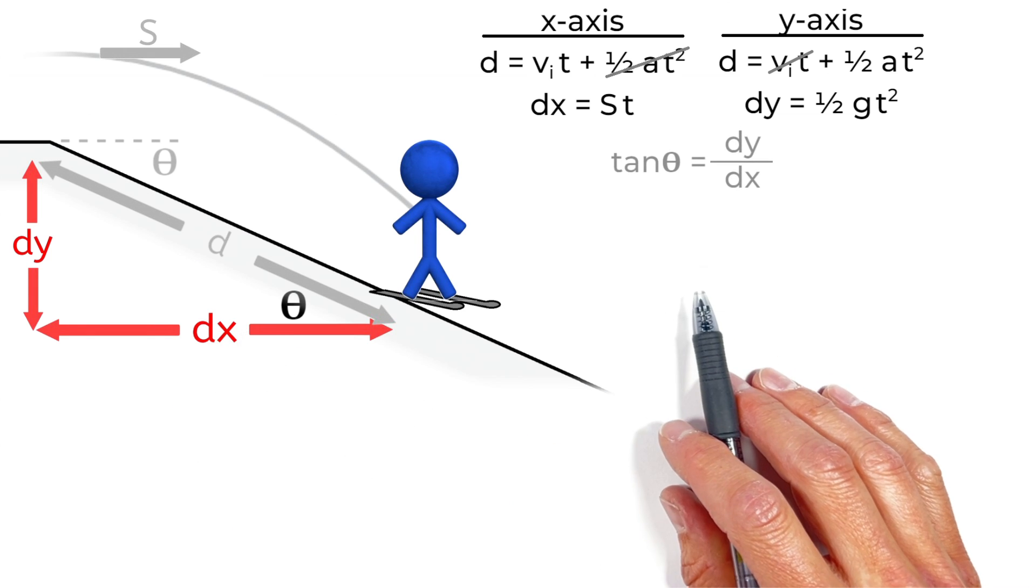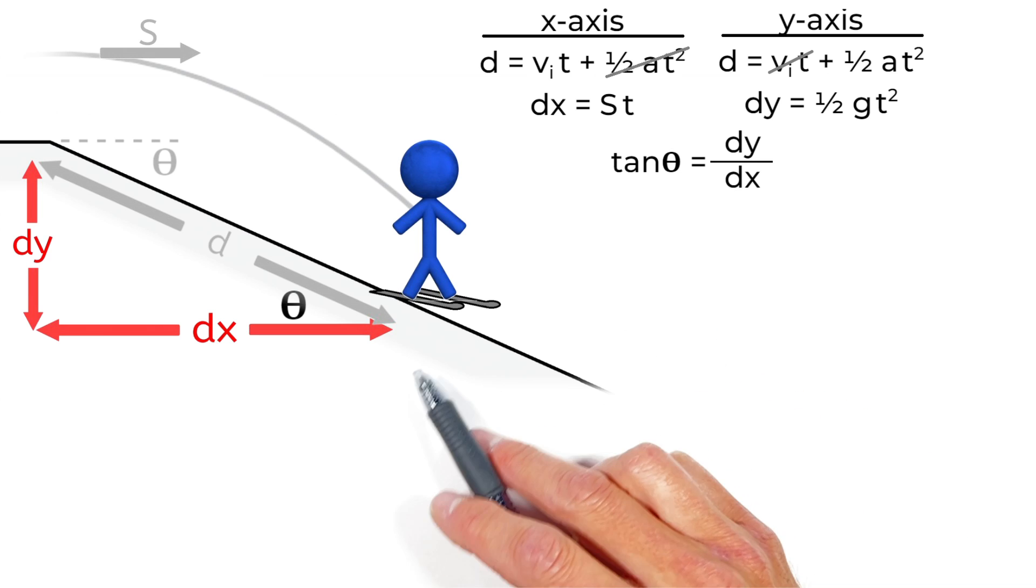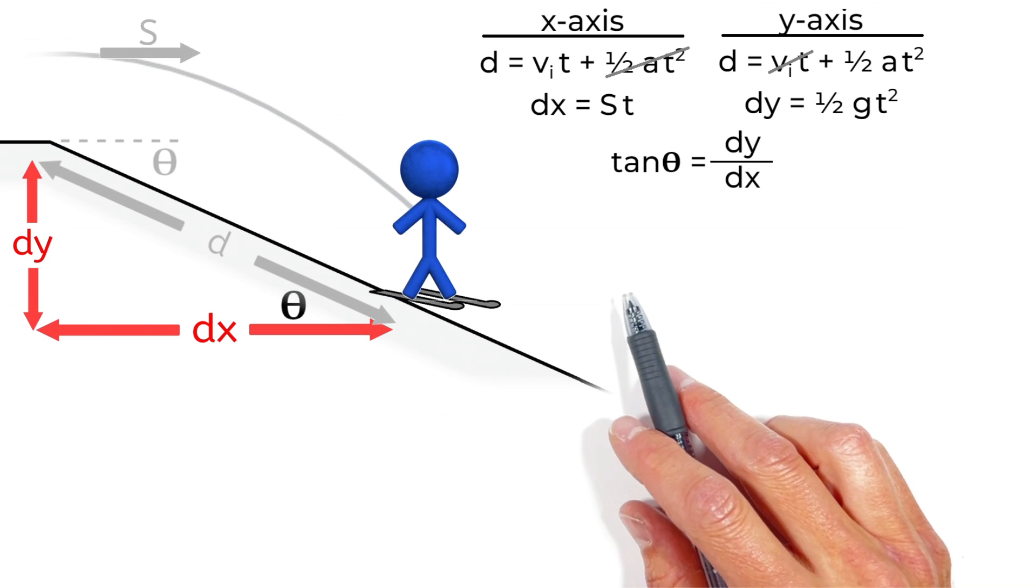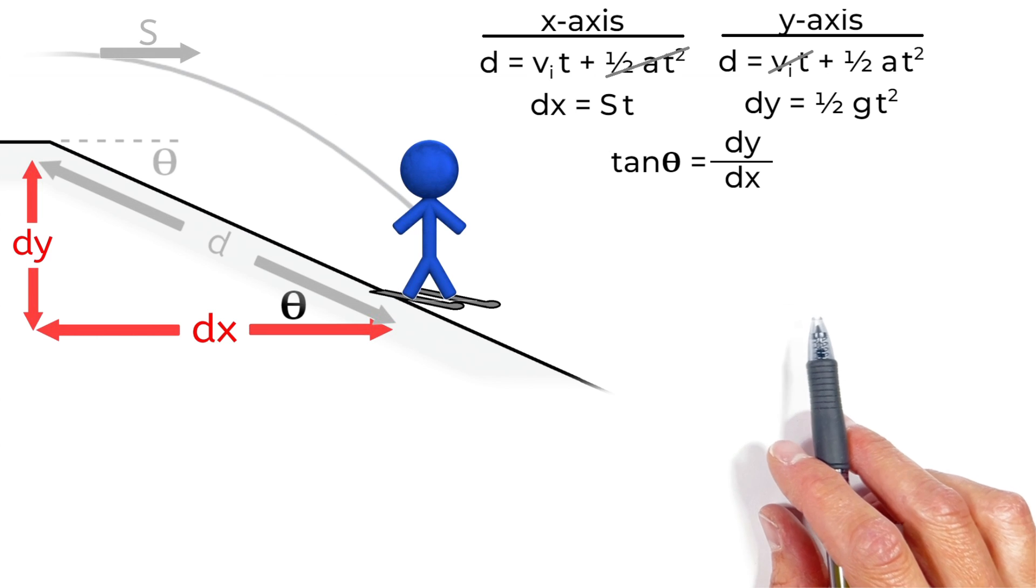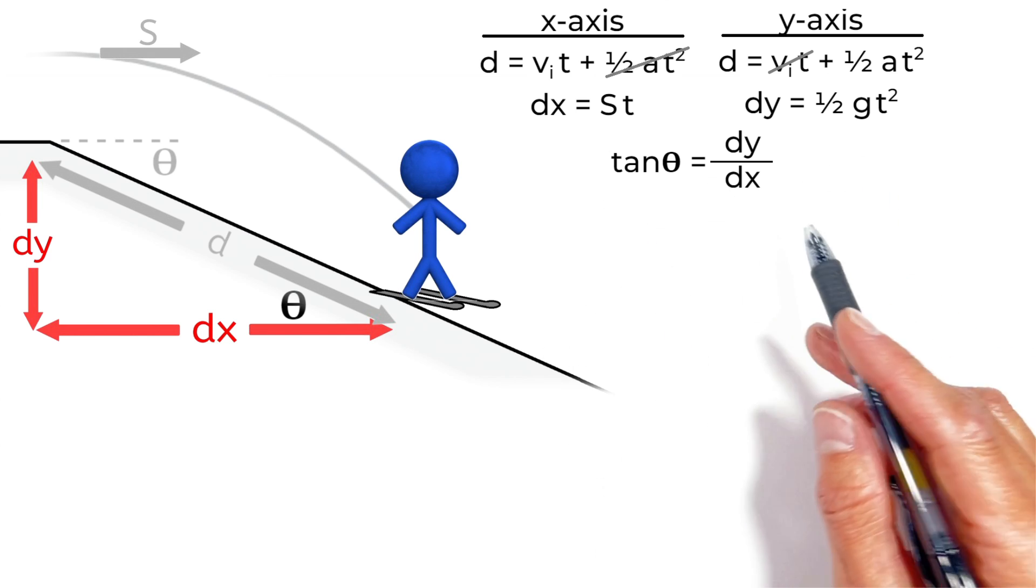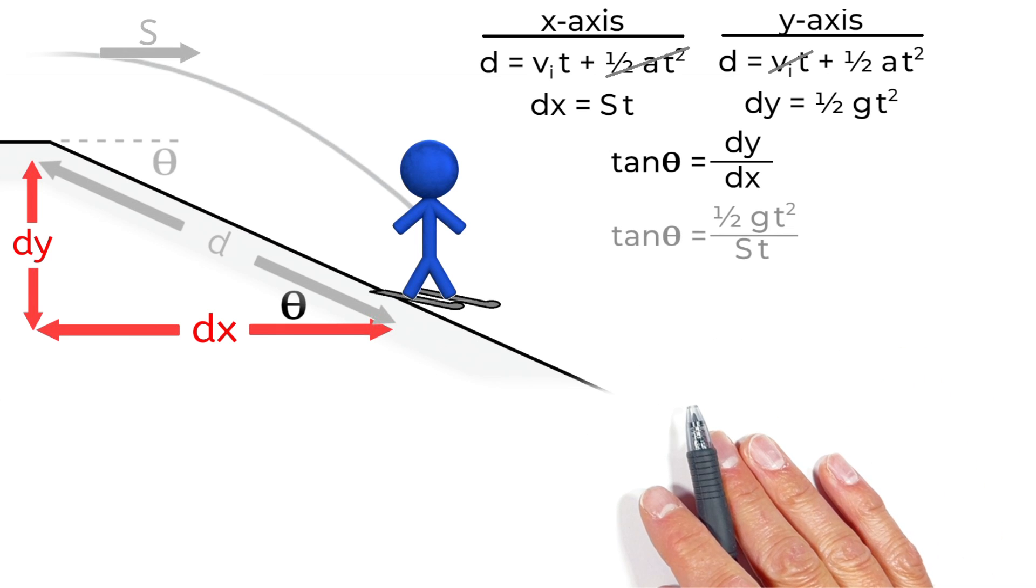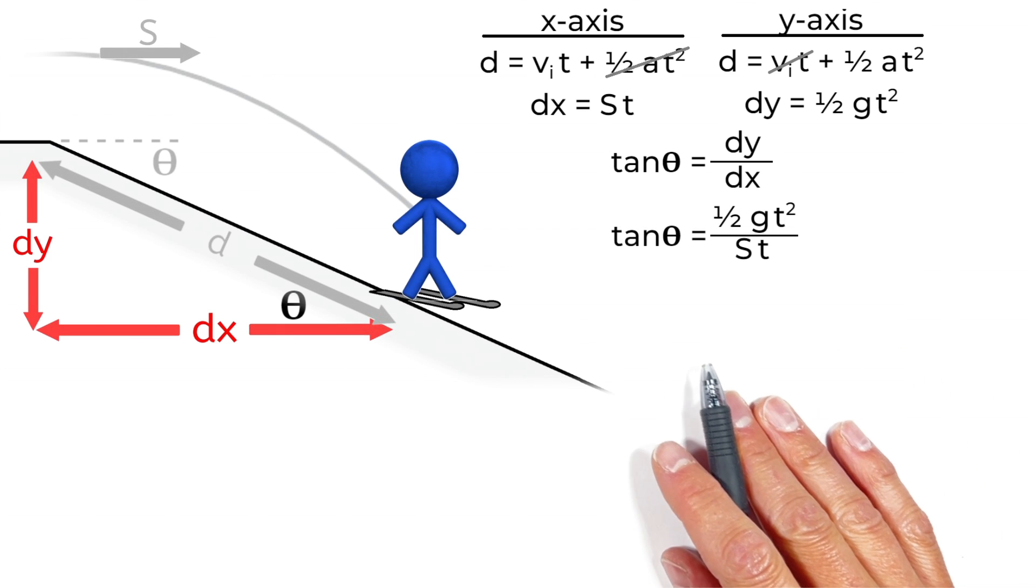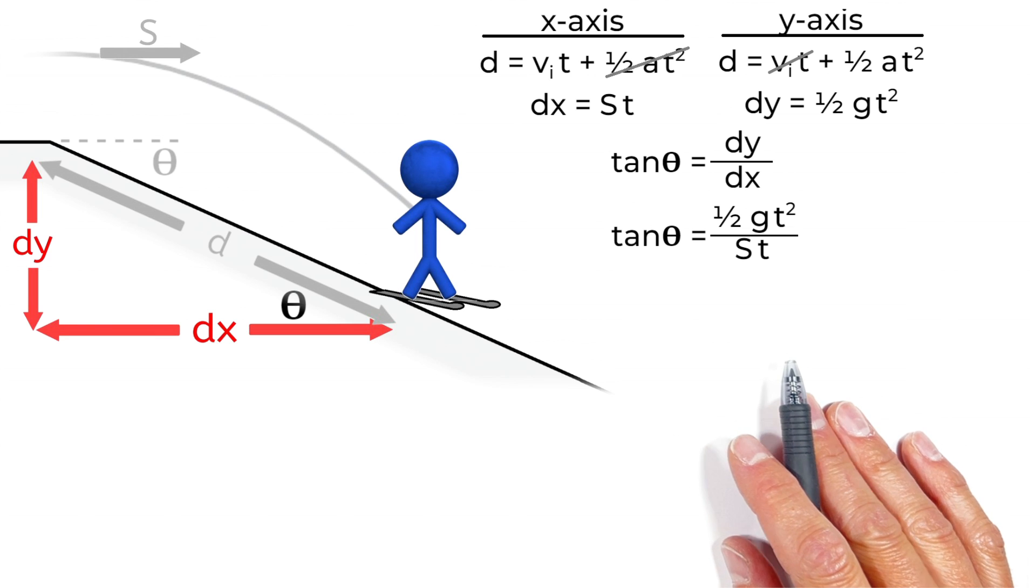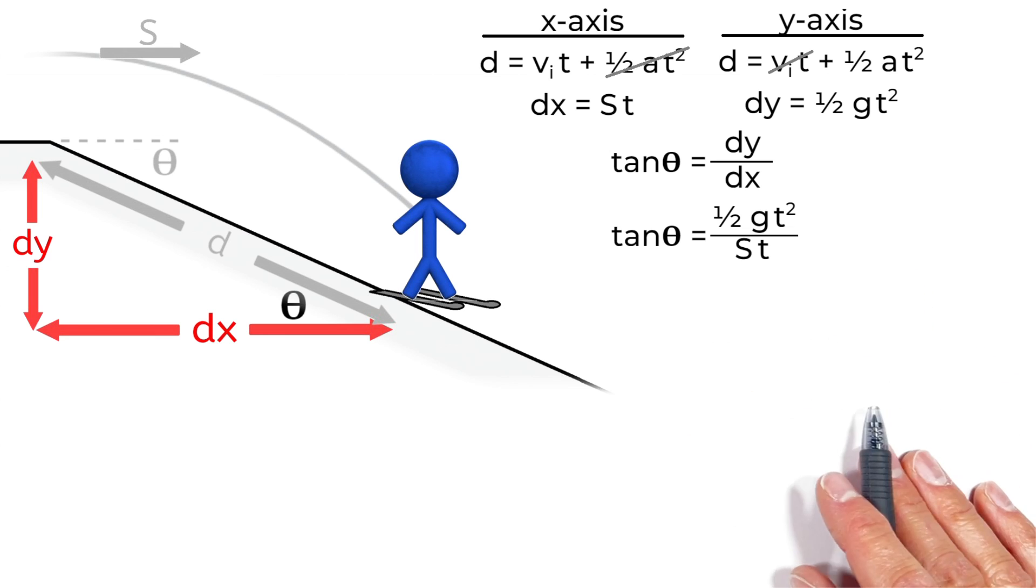So mathematically we can say the tangent of this angle of the hill is equal to our displacement in the y over the displacement in the x-axis. Now subbing our equations for the displacement in the x and y-axis into this function, we get an expression for the tangent of theta is equal to one-half gt squared over st.